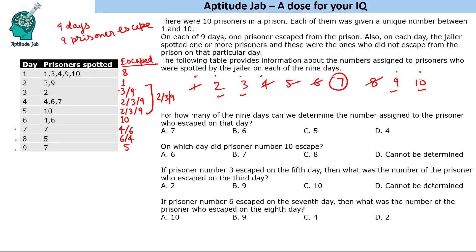So that is how we get the complete table — we can determine for some days exactly which prisoner escaped. The first question asks: how many of the 9 days can we uniquely determine the prisoner who escaped? We can determine day 1 (prisoner 8), day 2 (prisoner 1), day 6 (prisoner 10), and day 9 (prisoner 7). So for only 4 days can we uniquely determine the prisoner number.